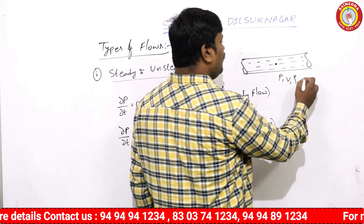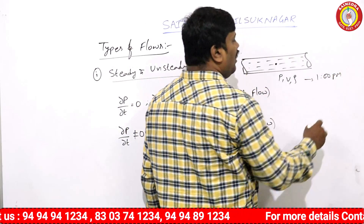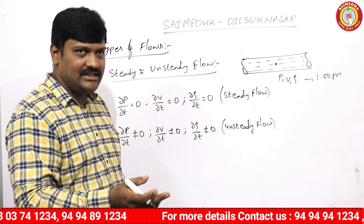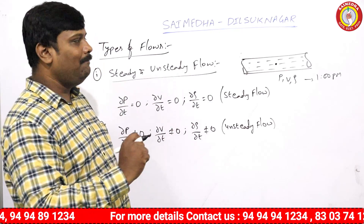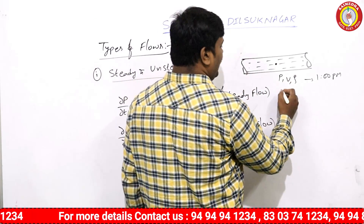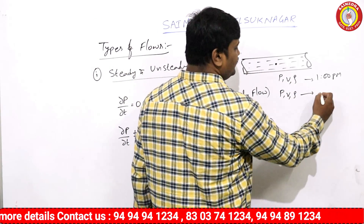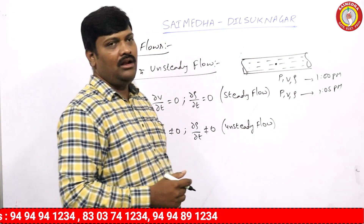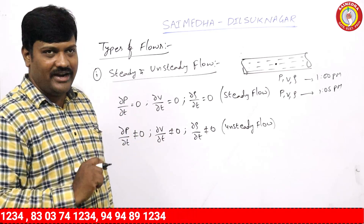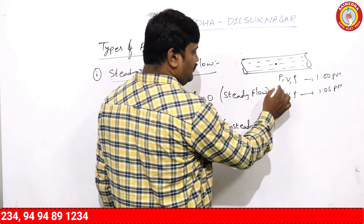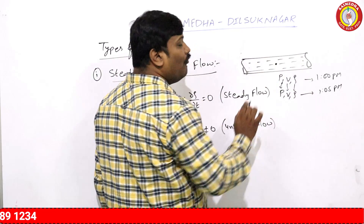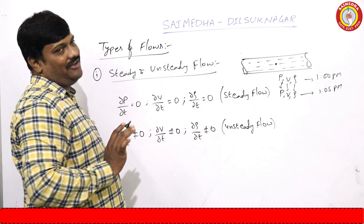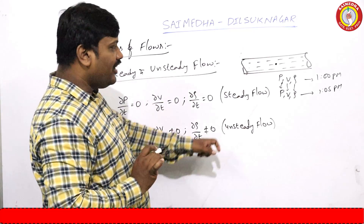At 1 p.m., let us take — after some time, it may be minutes, seconds, or hours. If we come after some time and measure pressure, velocity, density at 1:05 p.m. — after 300 seconds, like 5 minutes — and it is showing the same value, these values are the same. When these values are the same, then it is called a steady flow.